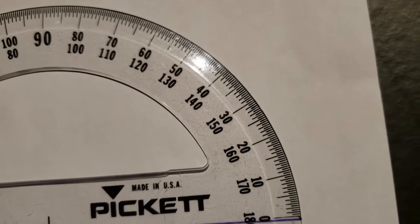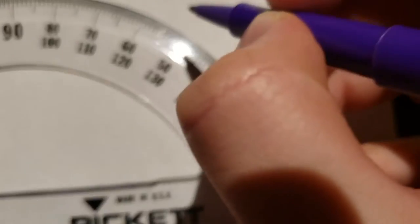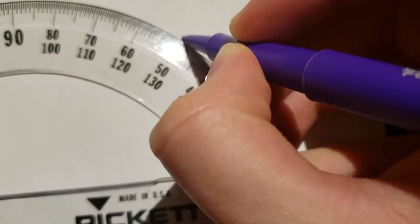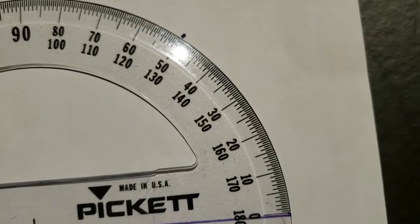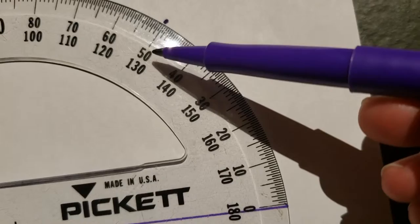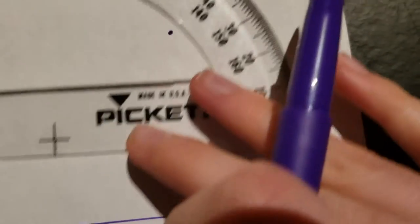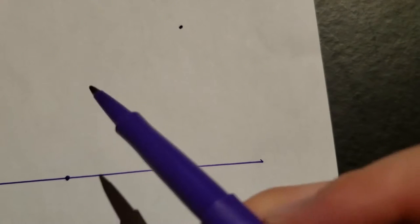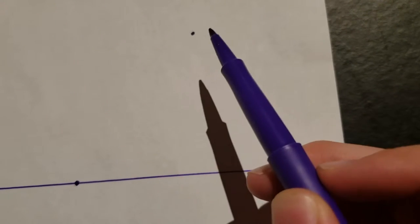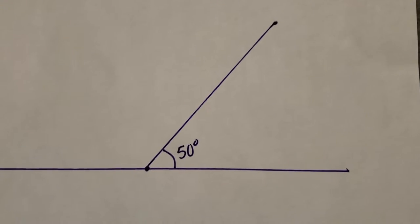Alright, now we're going to pick an angle that we want to draw. Let's say we want to do 50 degrees. Alright, so we find 50 on the protractor, and we follow that line, make a dot, move the protractor, and draw a line connecting these two dots. Now we have an angle of 50 degrees.